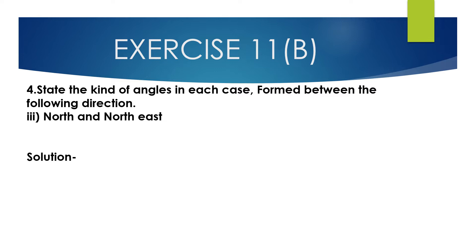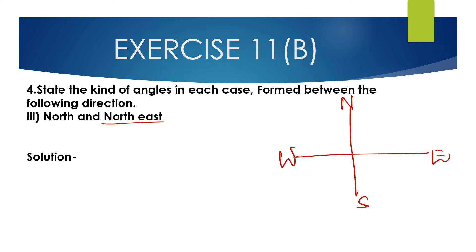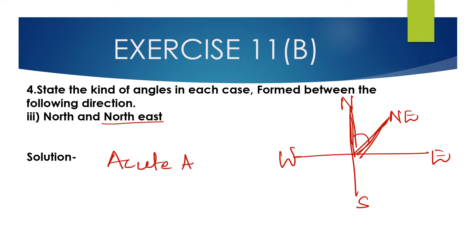Question number 4, third bit: State the kind of angles formed between the direction north and northeast. The angle formed between north and northeast is more than 0 degrees but less than 90 degrees. So this is an acute angle. The angle formed between north and northeast direction is an acute angle.